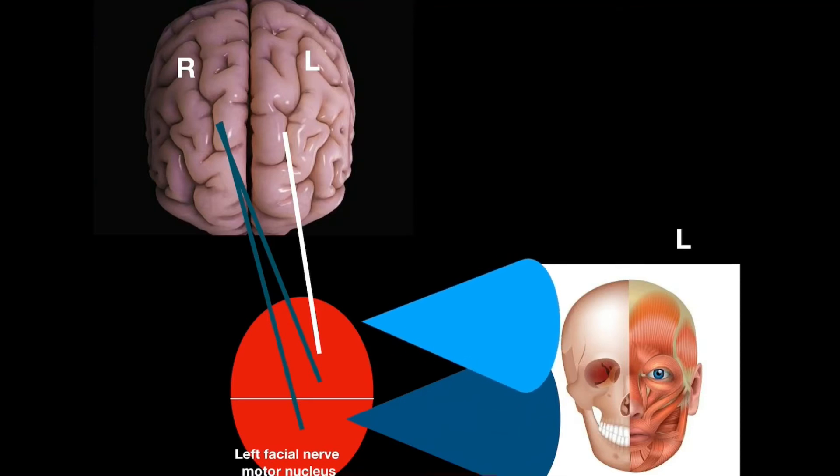The upper part of the face receives innervations from both sides of the brain. While the lower part receives innervations from only the opposite side of the brain.